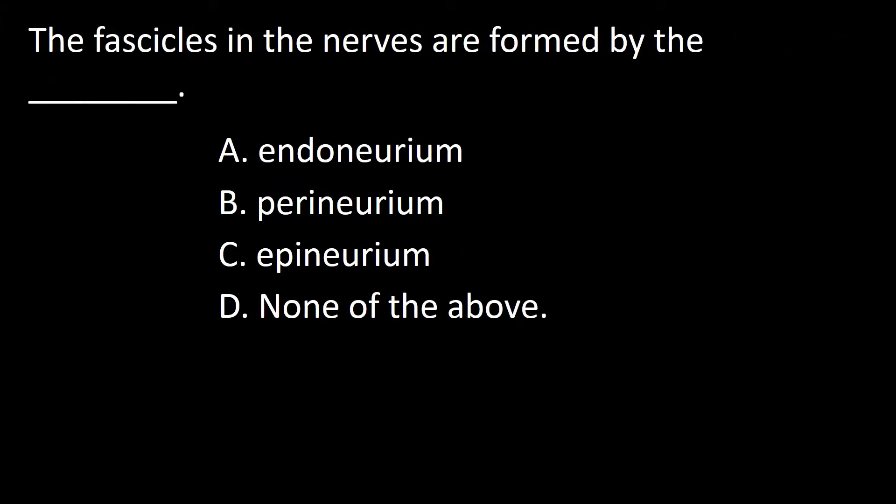Next question: the fascicles in the nerves are formed by the dash. A: Endoneurium, B: Perineurium, C: Epineurium, D: None of the above.